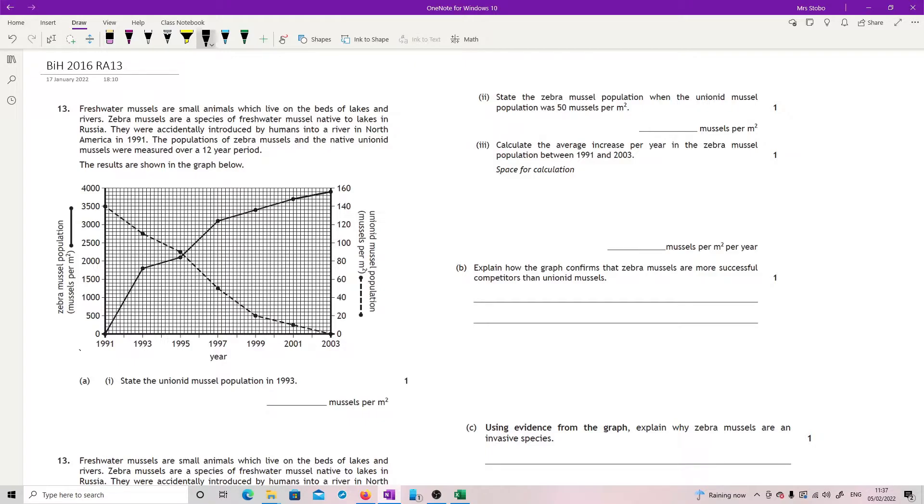The populations of zebra mussels and the native unionid mussels were measured over a 12-year period. Results are shown in the graph below. Okay, for part A, state the unionid mussel population in 1993.